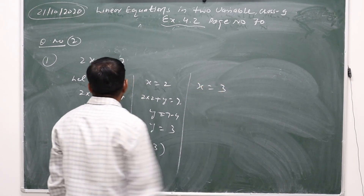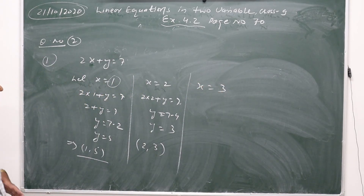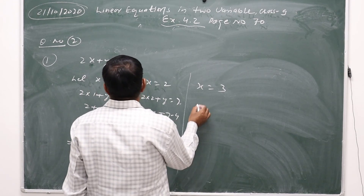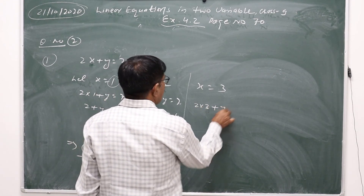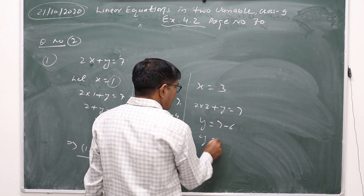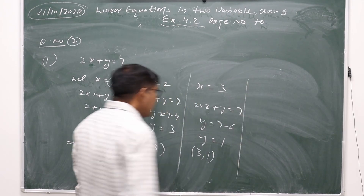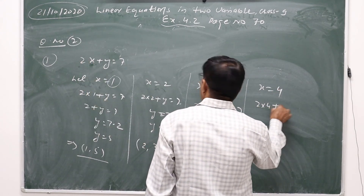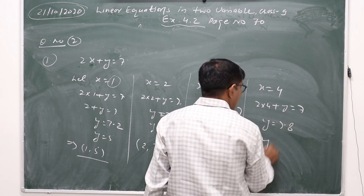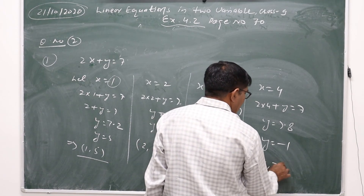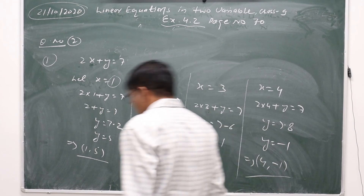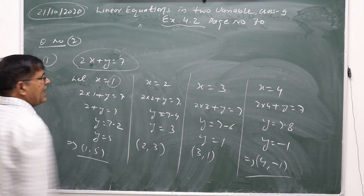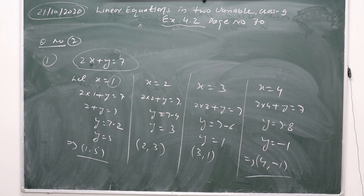Similarly, when x equals 3: 2 into 3 plus y equals 7, so 6 plus y equals 7, so y equals 1. The third set of solutions is (3, 1). When x equals 4: 2 into 4 plus y equals 7, so 8 plus y equals 7, so y equals minus 1. The fourth set of solutions is (4, -1).